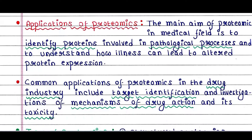The main aim of proteomics in the medical field is to identify proteins involved in pathological processes and to understand how illness can lead to altered protein expression. Common applications in the drug industry include target identification and investigations of mechanisms of drug action and its toxicity — that means what are the drug targets, how a drug acts in a cell, and whether it shows any toxicity.